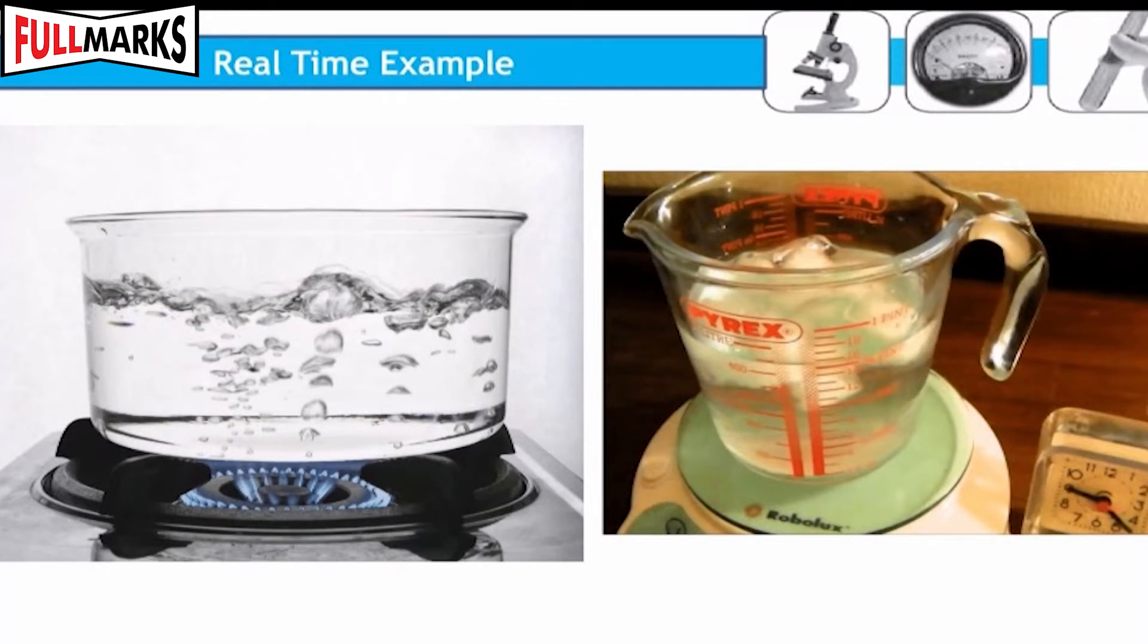Impure substances melt over a range of temperatures. Melting point decreases if some impurities are added to a pure substance. If pressure is increased, melting point is decreased.